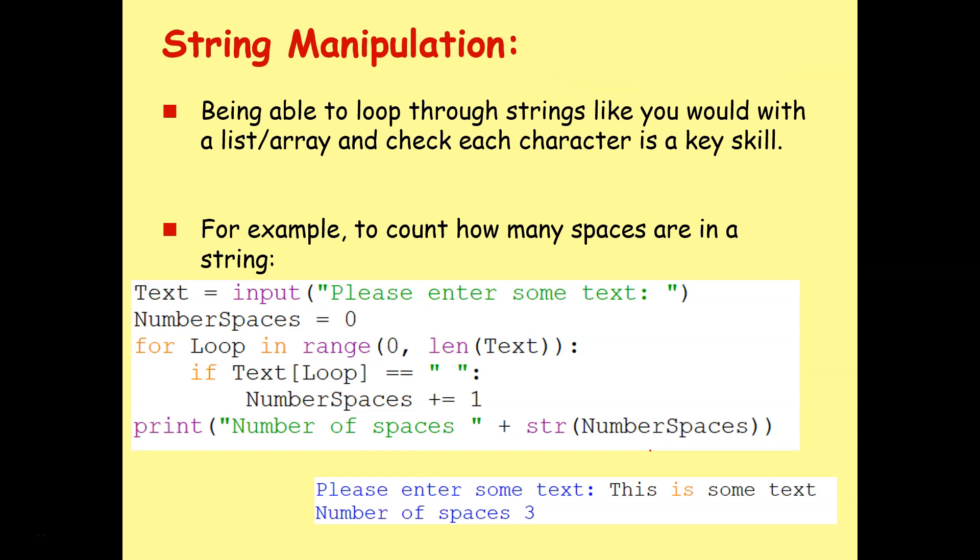Being able to loop through strings just like you would a list or an array in Python and check each character is a key skill. So if you have a look at the example here, this is a bit of code that just works out how to count how many spaces are in a string. So it says text equals input, please enter some text. Number of spaces equals 0. And now I'm going to loop through that whole piece of text using the for loop in range 0, len text. If you remember, len text is just looking at whatever text I've typed in and working how many characters it is. So go from 0 to the end of the text means check each character one at a time.